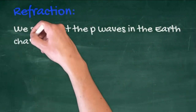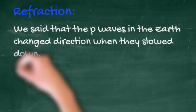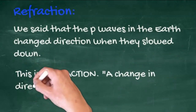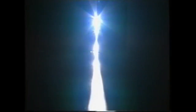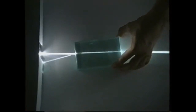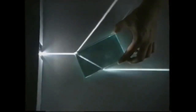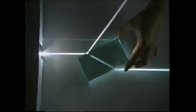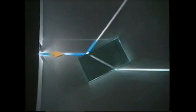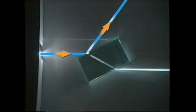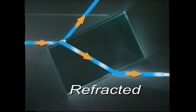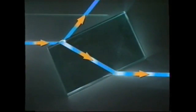The P waves in the Earth changed direction when they slowed down. This is called refraction, defined as a change in direction due to a change in speed. Shining a powerful light source through a thin slit produces a straight, narrow beam. Place a glass block in its path and the beam behaves differently as the block is rotated — some of the light is reflected, the rest passes into the glass. The light bends in one direction as it enters the block, and in the other as it emerges from the lower edge. This shift in direction is called refraction.